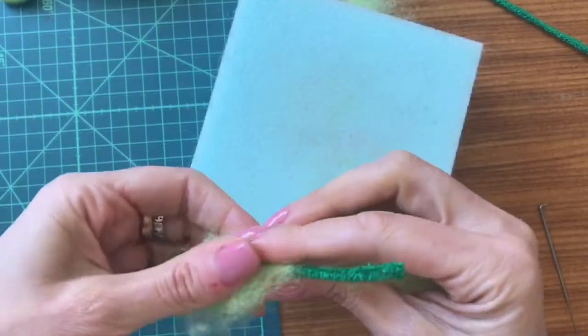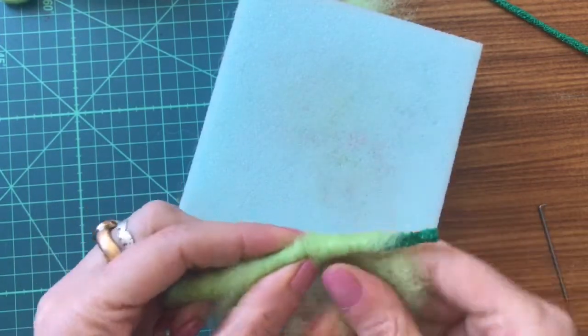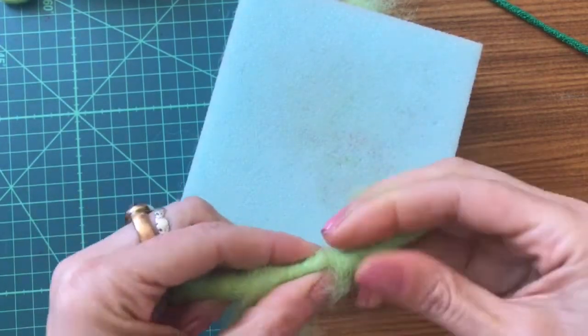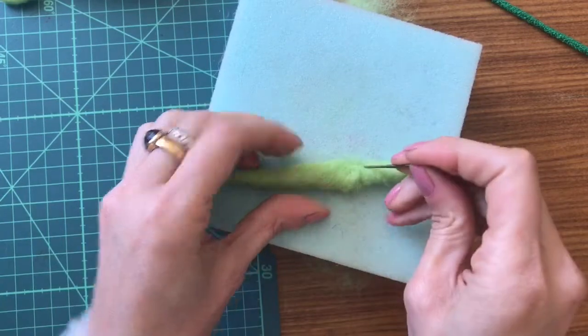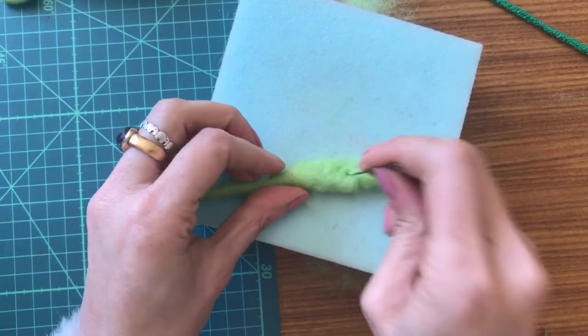Now I'm going to wrap more green wool around the body and the head area. Try not to go down onto the tail. Keep that thin.